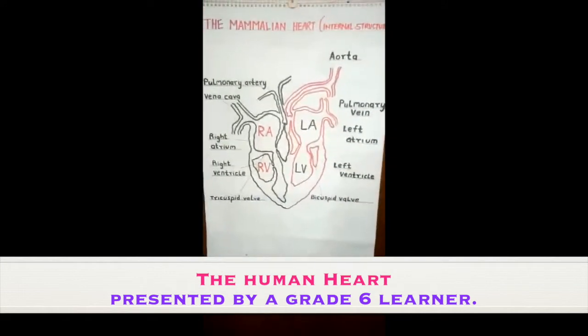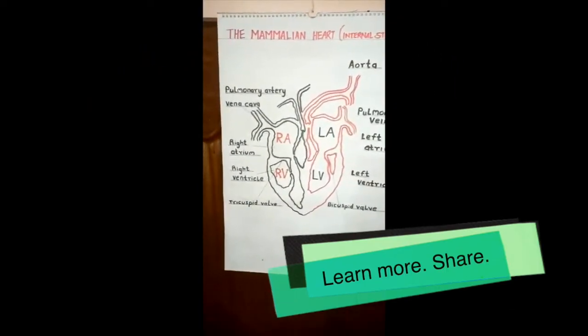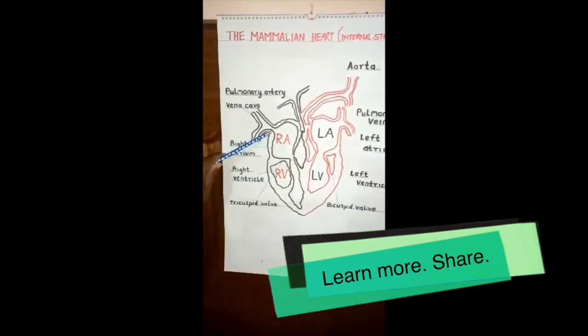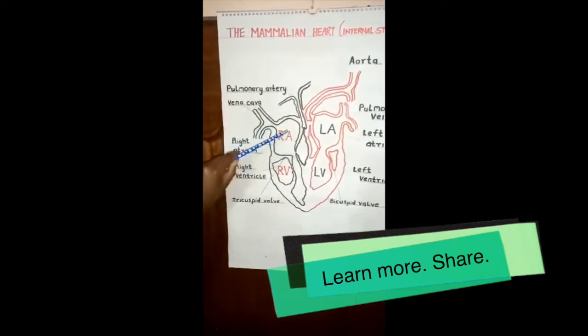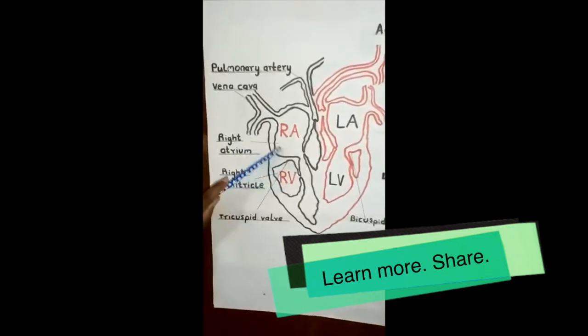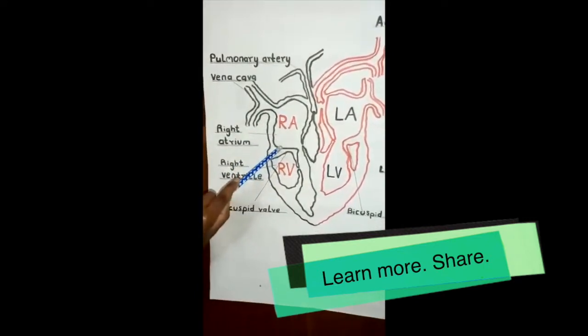The blood flows from other body organs into the heart through the vena cava and into the right auricle. And from the right auricle, it flows to the right ventricle through a valve known as the tricuspid valve.